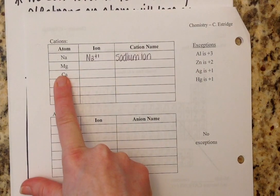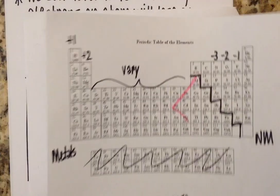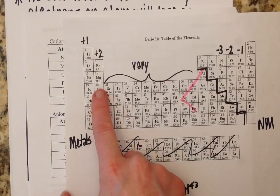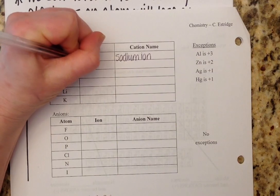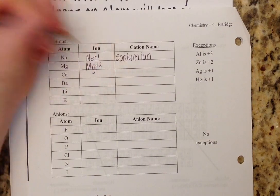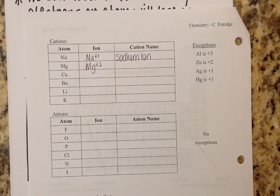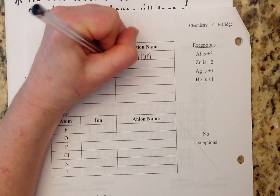This is magnesium. Magnesium is in column two. So magnesium has a plus two charge when it becomes an ion. And we now refer to this as the magnesium ion.